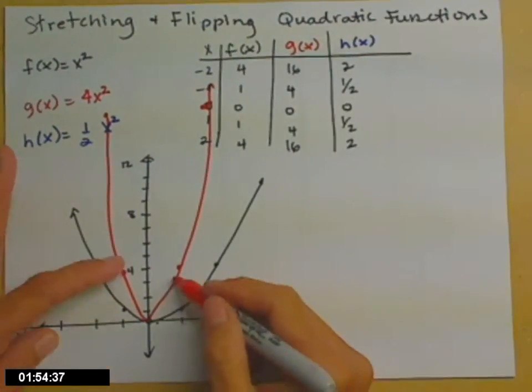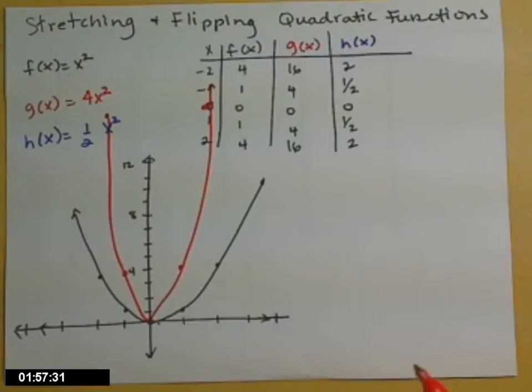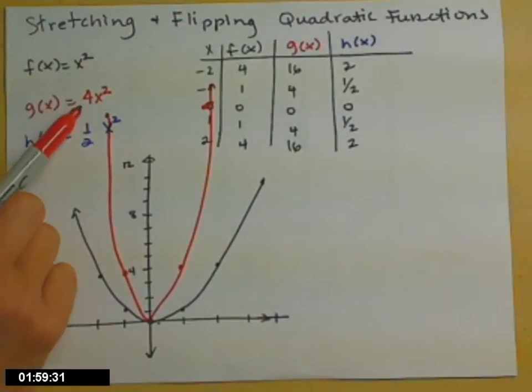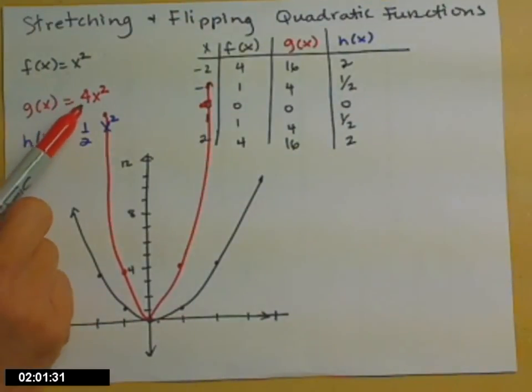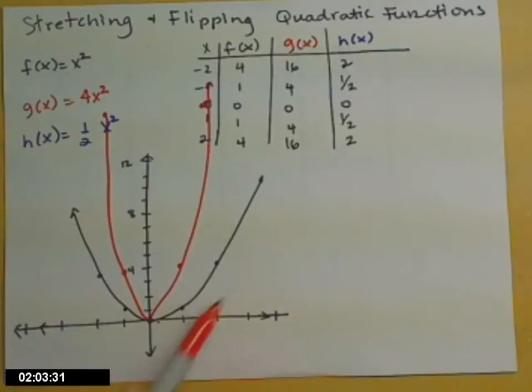Notice the y values are all above the black y values. So when you multiply by 4, by a number greater than 1, it takes that basic parabola for x² and makes it leaner, makes it taller and skinnier.